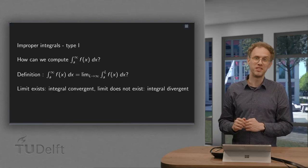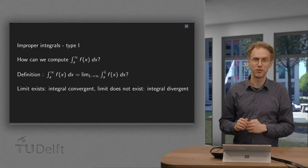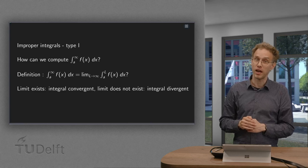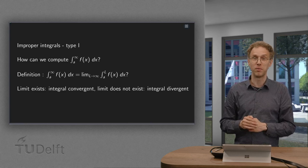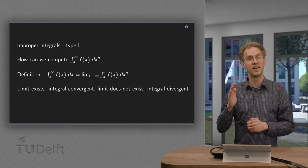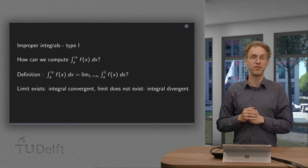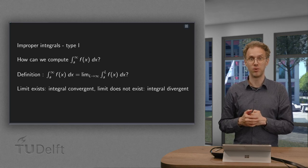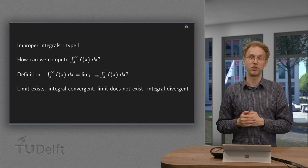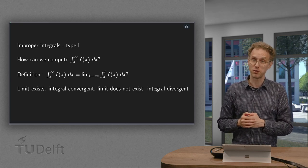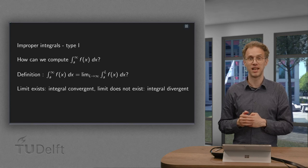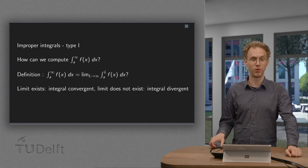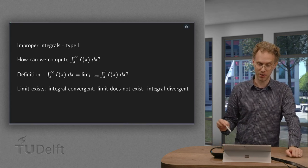We know how to compute definite integrals from a to b, but what happens if one of the boundaries is infinite? In that case we have a so-called improper integral — an improper integral of type 1 to be precise. How can we handle this? That is what you will learn in this video.